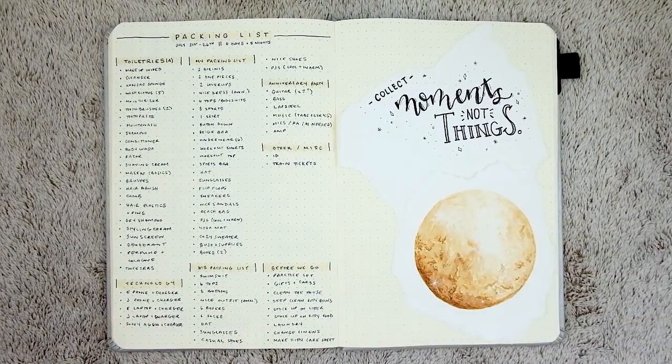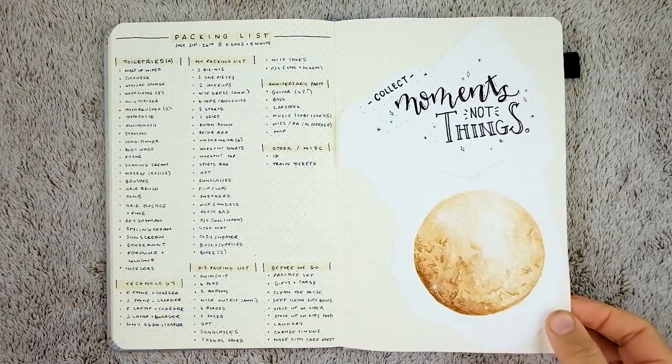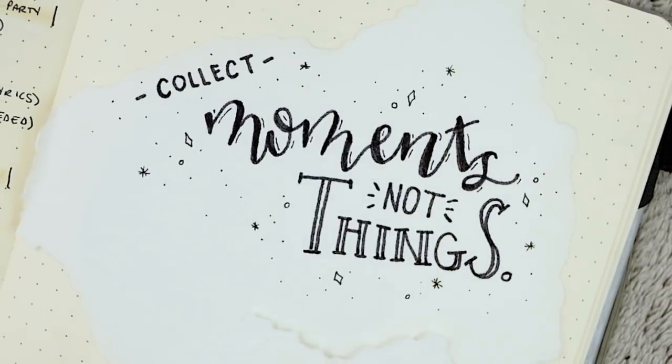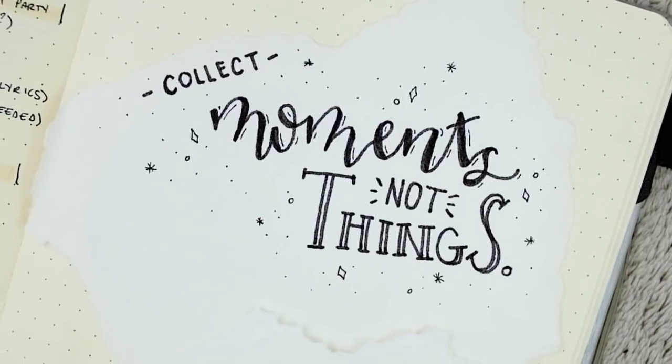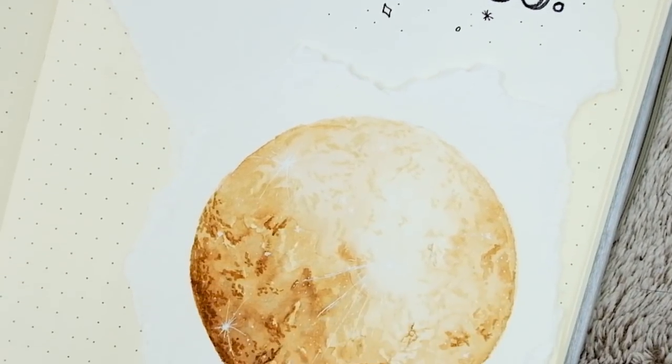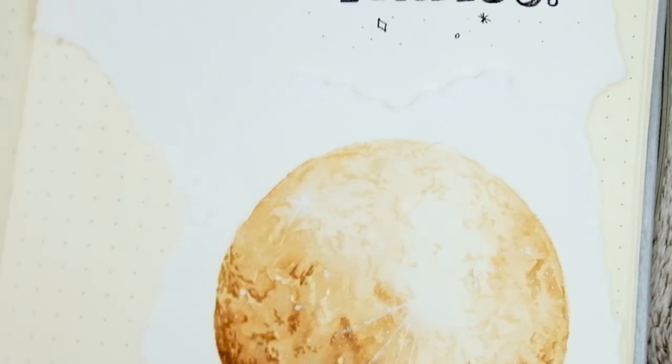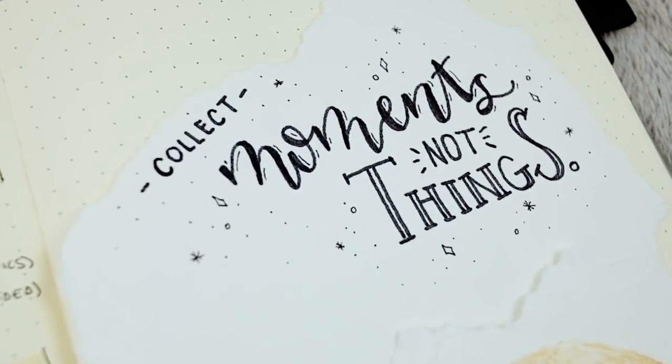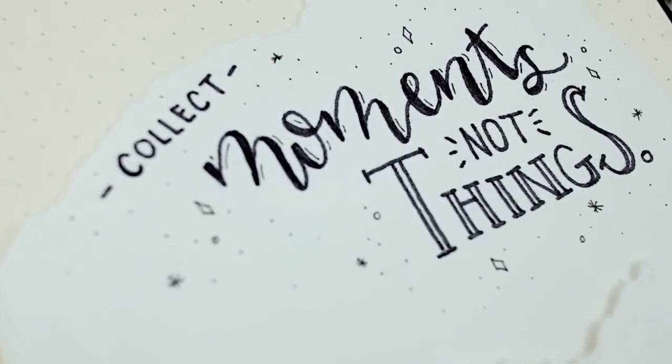Since you made it all the way to the end of the video and I'm sure you're looking for something else to watch, why don't you check out my August plan with me video? I did something really fun this month. I let my Instagram followers choose basically everything about how my bullet journal would turn out, and it was so much fun. I'm really happy with the result, so go check out that video if you haven't watched it already.